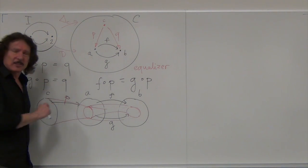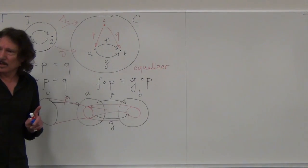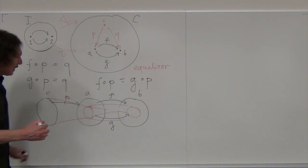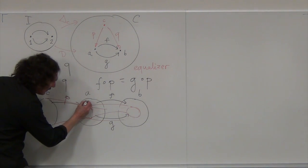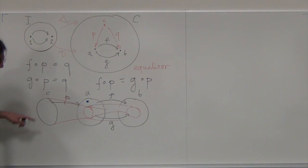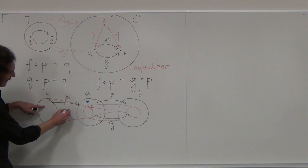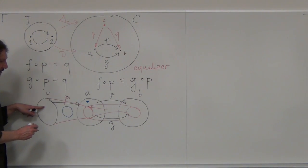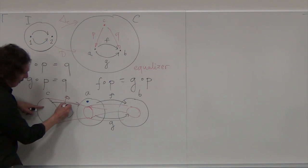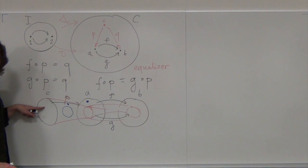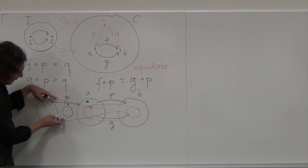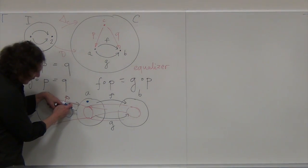But it includes all of them. Because if there were another point on which F and G are equal and it was not included, then I could find a better candidate — one that is like C plus one more object. If we would factorize, that would map this into the blob without the extra point, and then follow. So the best one has to include all of them.